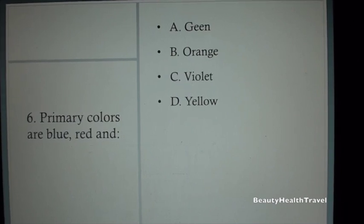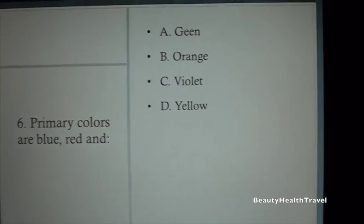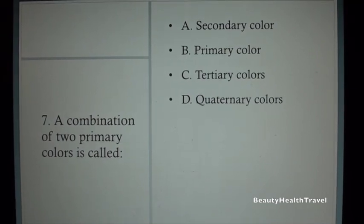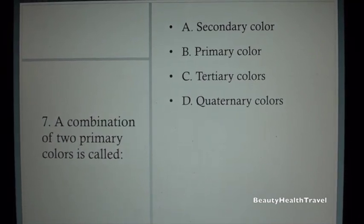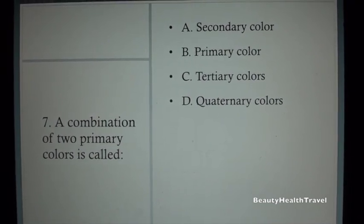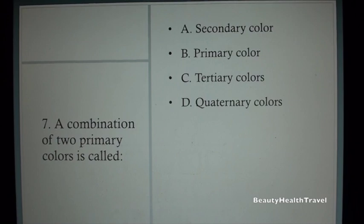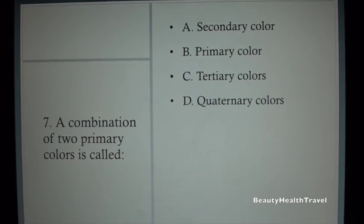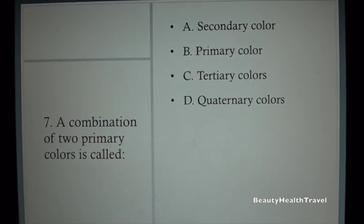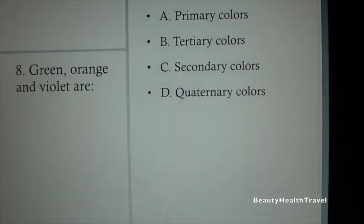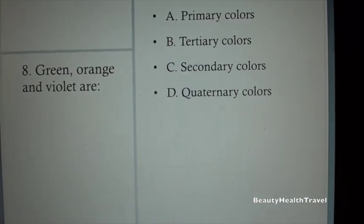Question 6: [answer C. Violet, D. Yellow]. Question 7: A combination of two primary colors is called: A. Secondary color, B. Primary color, C. Tertiary color, D. Quaternary color.